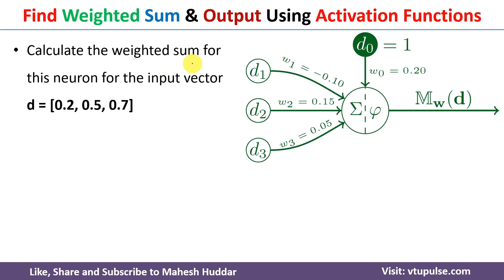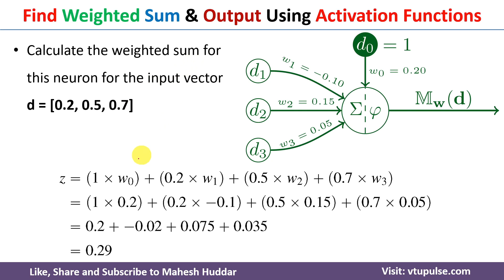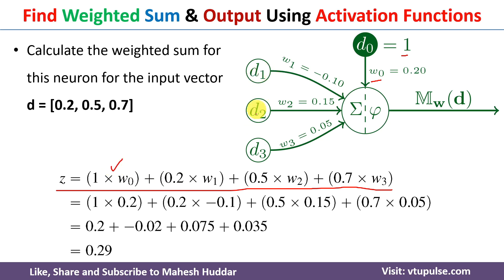First we will try to calculate the weighted sum. To calculate the weighted sum, we use this equation: Z is equal to the input multiplied by weight. First, the input to the bias is equal to D0, that is 1, and the weight is W0 — so 1 multiplied by W0. Next, the inputs are D1 multiplied by W1; D1 is 0.2, so 0.2 multiplied by W1. D2 multiplied by W2, that is 0.5 multiplied by W2. D3 multiplied by W3; D3 is 0.7 multiplied by W3.